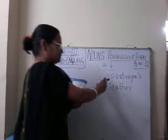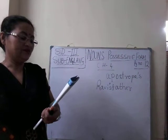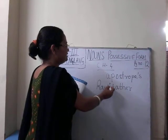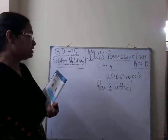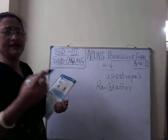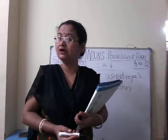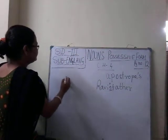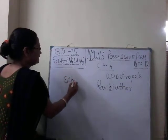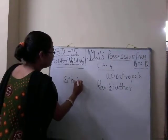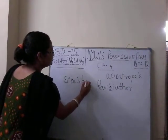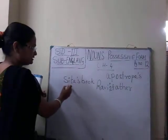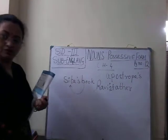So 'Ravi's father,' 'Mohit's father' — I write R-A-V-I then apostrophe S: 'Ravi's father.' Now many more sentences are there. For example, 'Sita's book' — this book belongs to Sita. Who is the owner of the book? Sita. So I write S-I-T-A, then apostrophe S: 'Sita's book.' Sita's book means this book belongs to Sita; Sita is the owner of this book.